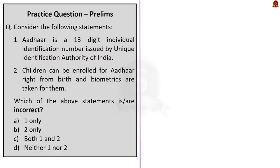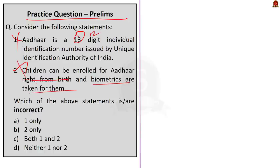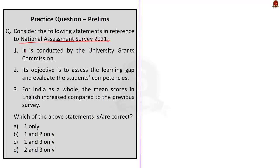A practice question asks: Statement 1 — Aadhaar is a 13-digit individual identification number issued by UIDAI. This is incorrect because Aadhaar is a 12-digit number. Statement 2 — Children can be enrolled for Aadhaar from birth and biometrics are taken for them. The first half is correct, but biometrics are not captured for children below five years as they are still in the development stage. Both statements are incorrect, and since the question asks to choose incorrect statements, the answer is Option C: both 1 and 2.